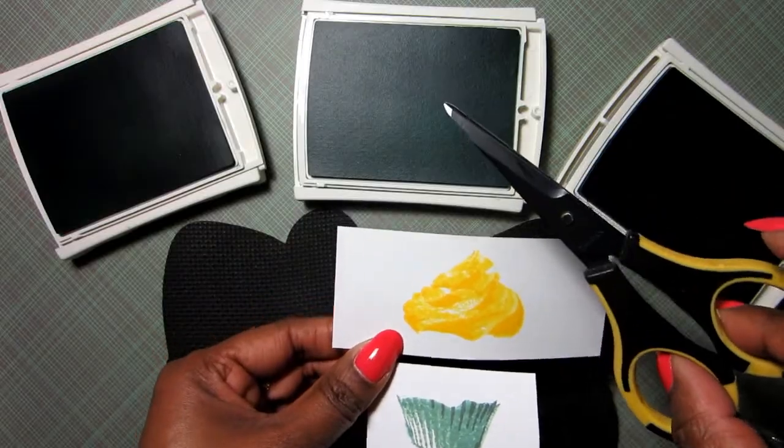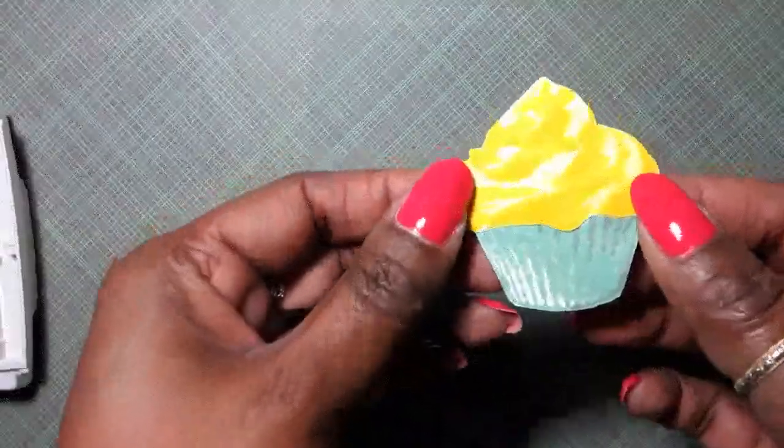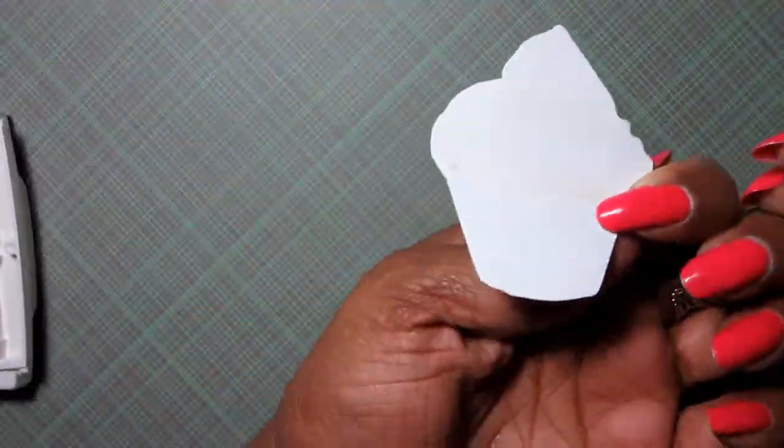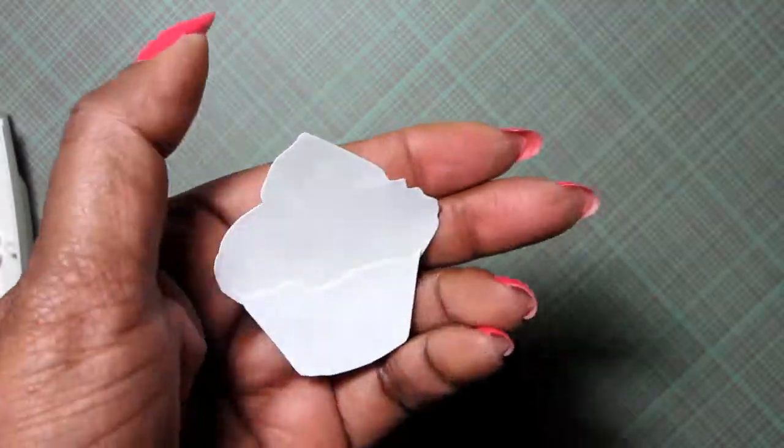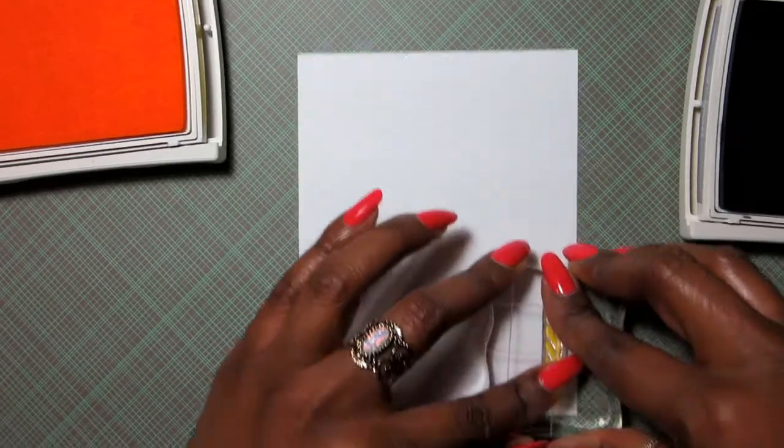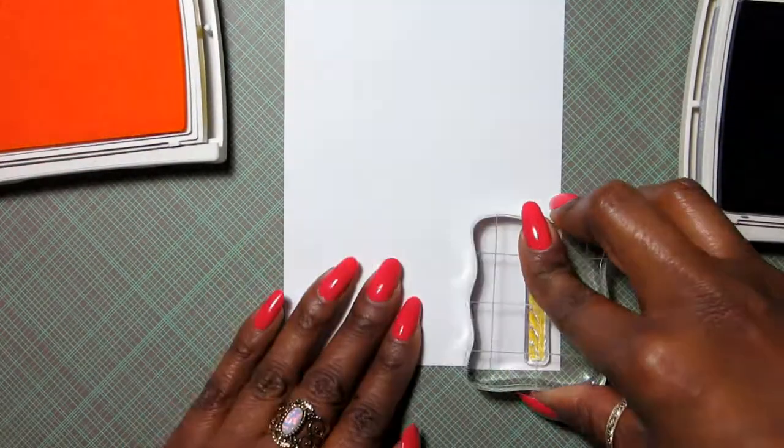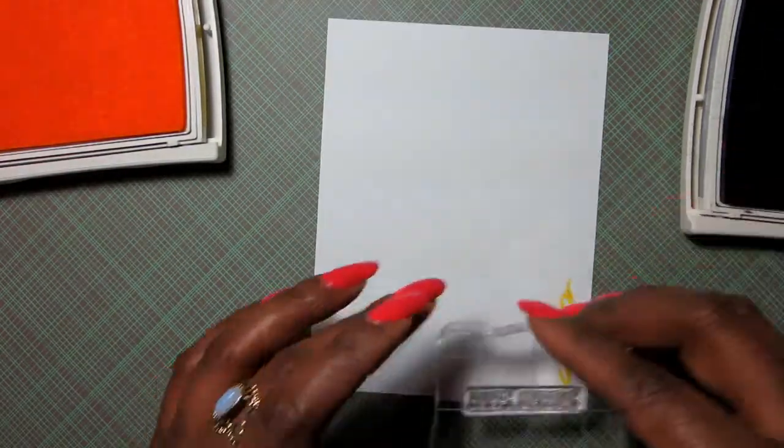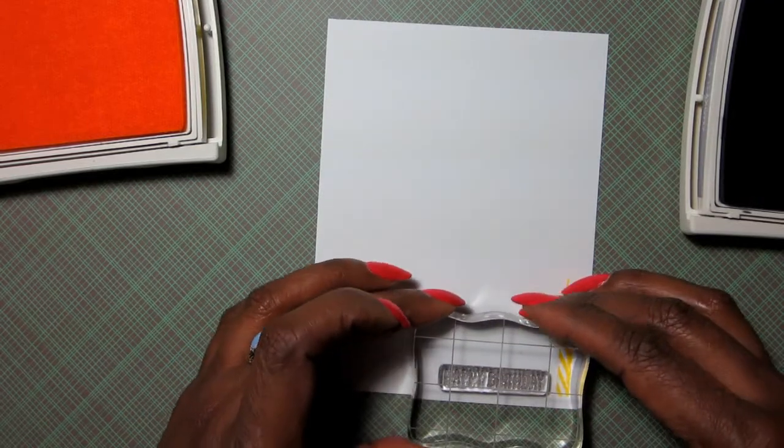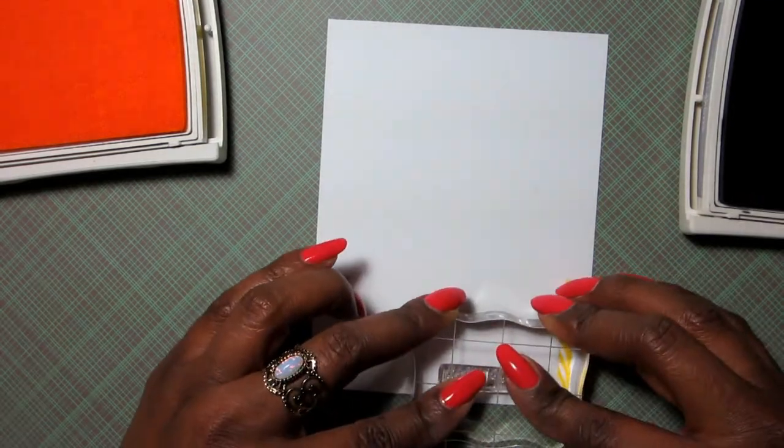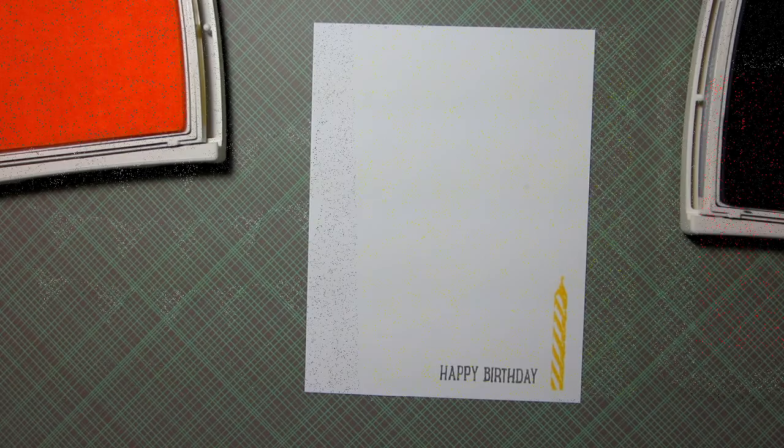I'm just going to hand cut these because I don't have the dies and I also want them to be really close. I've just used a little bit of my multi-medium matte glue to glue this together. Then we're just going to set that aside and stamp the inside of our card. I'm using the Yo-Yo Yellow ink again and that little candle. I'm going to stamp the sentiment with Smoky Slate, and those two colors coordinate really nicely.